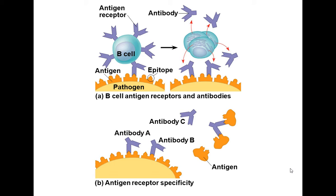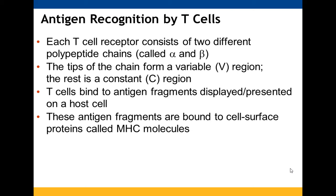The B-cell attaches to the epitope of the pathogen, which activates the B-cell. Once activated, it goes through proliferation — making many copies — and those copies generate antibody proteins. The antibodies then go out, identify matching epitopes, and tag them.